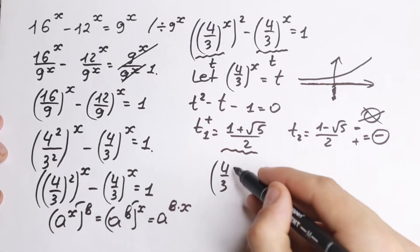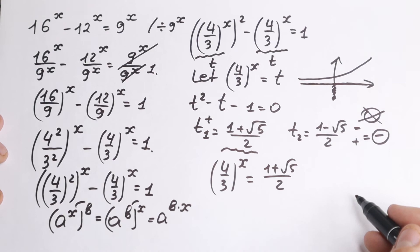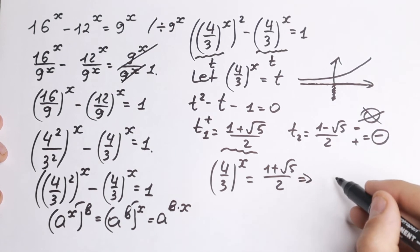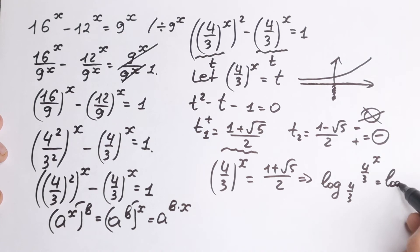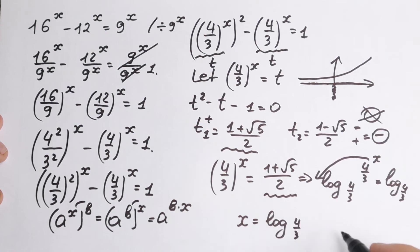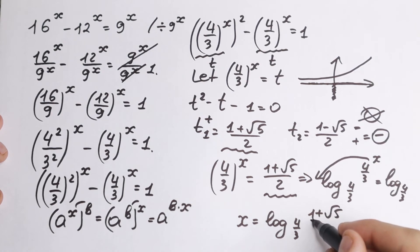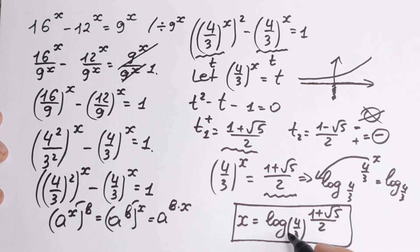We work only with the positive root. So 4 thirds to the x equals 1 plus square root of 5, over 2. Taking the logarithm base 4 thirds of both sides, we get x equal to log base 4 thirds of the quantity 1 plus square root of 5, over 2. Of course we can simplify further, but let's leave it like that. If you have a calculator, you can easily find this solution.